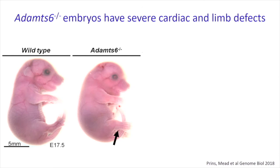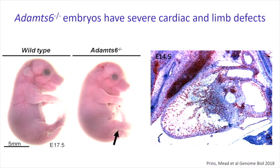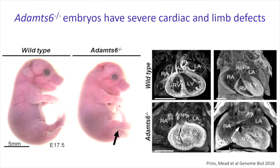The ADAMTS-6 knockout mice die before birth. They have a profound developmental phenotype — you can see a defect in the limbs: they are mal-rotated and the hind limbs are shorter. This gene is also highly expressed in the heart, as shown by the in-situ hybridization signal for ADAMTS-6 RNA in the myocardium and outflow tract. These mice have a complex cardiac anomaly approximating a couple of human anomalies, most visibly an aorta and pulmonary artery that both arise from the right ventricle — called a double outlet right ventricle.